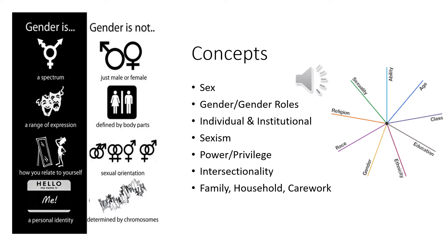Sexism occurs when sex is seen as basically genetically determined or immutable — unchangeable — and also harmful or damaging attributions are made about all men or women. Even if these sound kind of positive, like 'all women are nurturing,' that's still damaging. And obviously something like 'all men are aggressive' is as well.